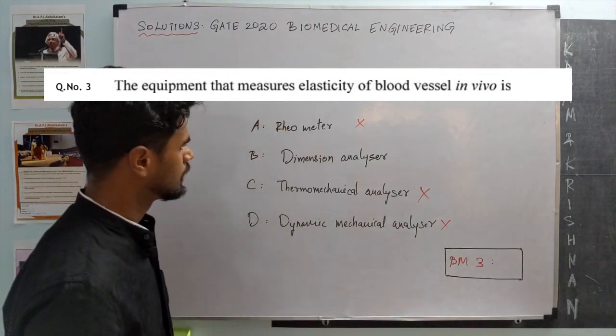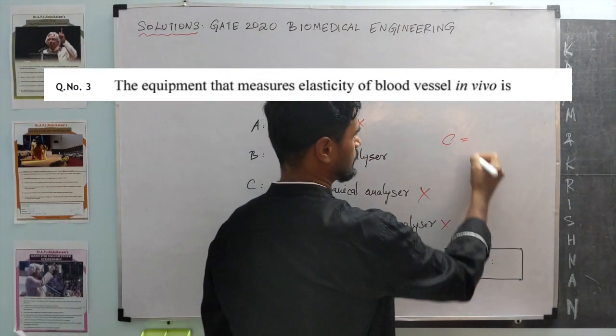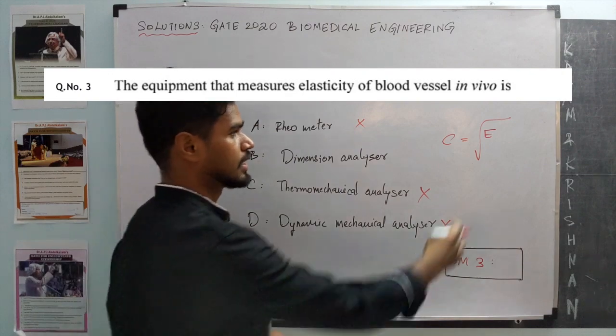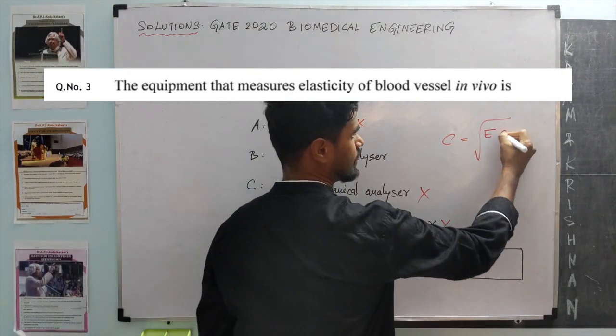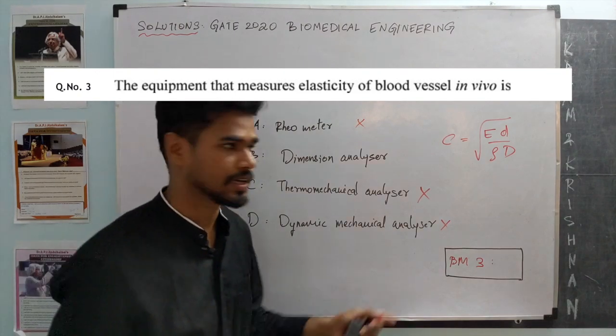But using this relation known as Moens-Korteweg, it is possible to measure elasticity of blood vessels if we know the dimensions of arteries as well as the thickness.